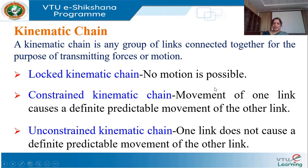Based on mechanical constraint, kinematic pairs are classified as closed pair and unclosed pair. In a closed pair, one link is completely enclosed within the other — to separate them, you would have to destroy one link. In an unclosed pair, we can easily separate the two links. Based on relative motion, pairs are classified as sliding pair, rolling pair, turning pair, helical pair, and spherical pair.